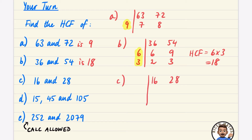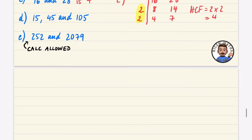For part c, I have 16 and 28. Using the table method, I halve them to get 8 and 14, then halve again to get 4 and 7. There are no more common factors between 4 and 7, so the highest common factor is 2 × 2 = 4.